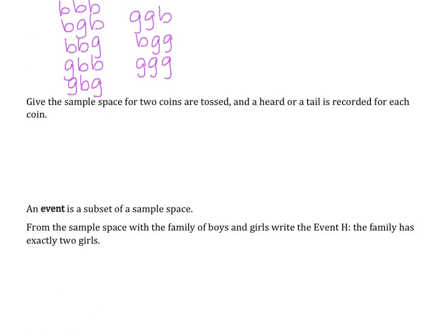Let's give the sample space for two coins that are tossed and a head or tail is recorded for each coin. So if I toss one coin, I could have head and head, I could get tail and tail, I could get head then tails, or tails then head. So those are the only options that I could get when flipping two coins.